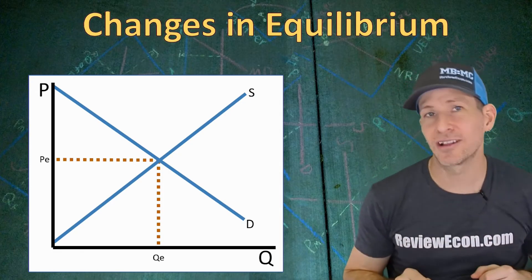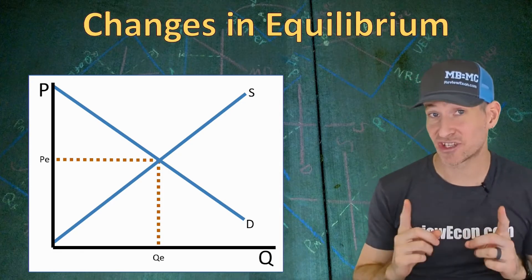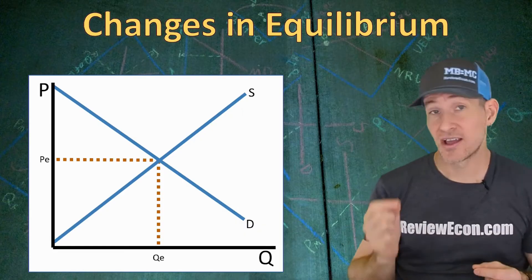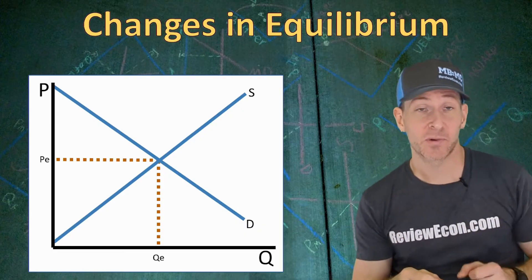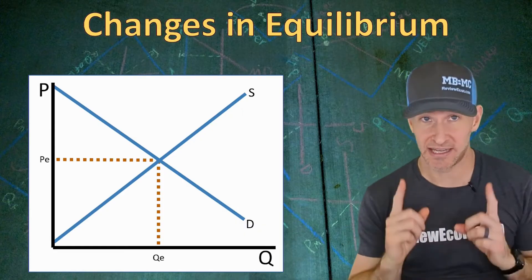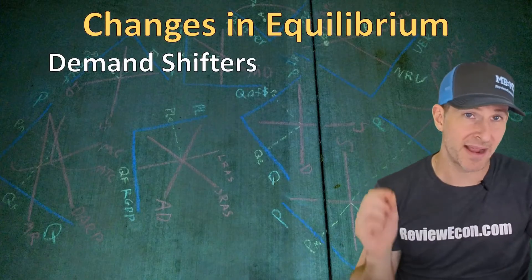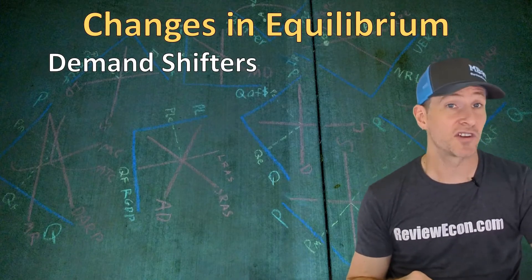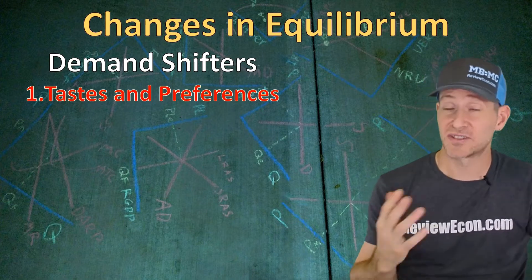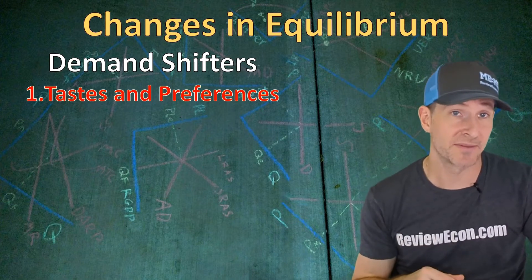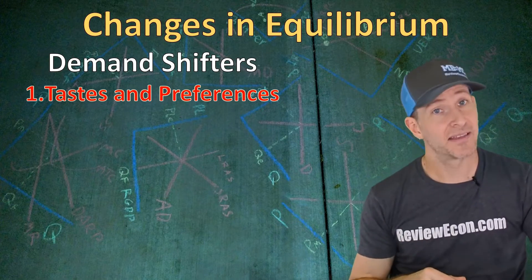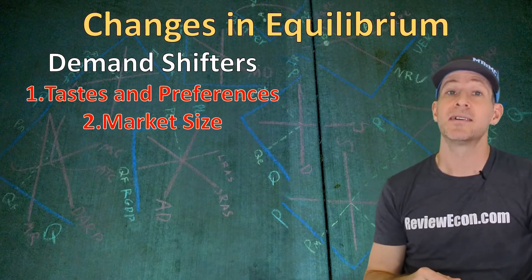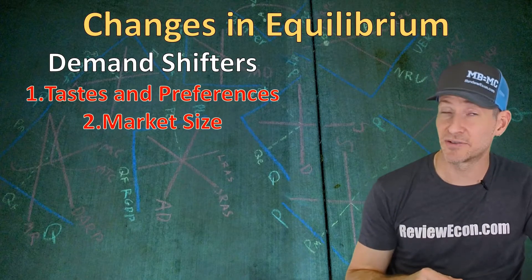Supply and demand curves can shift, and when they do the equilibrium price and equilibrium quantity will move. Let's go over our demand curve shifters. First, we have consumer tastes and preferences — when something is more popular, consumers demand more of it. Second is market size: when there are more consumers in a market, we see an increase in demand. Third is prices of related goods.